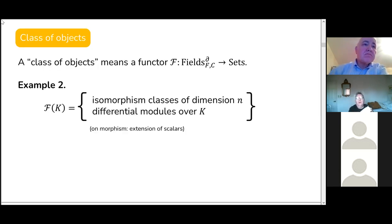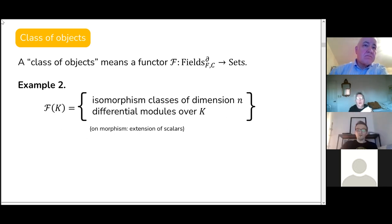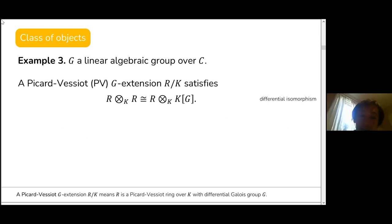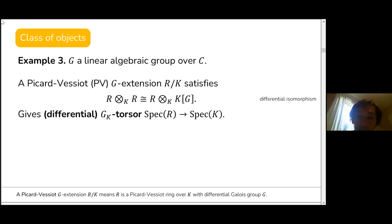In addition to differential modules, we are interested in Picard-Vessiot extensions with a given differential Galois group G. Recall that Galois extensions can be viewed as G-torsors where G is a finite group. Similarly, Picard-Vessiot extensions are G-torsors, but now G is a linear group.